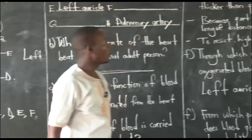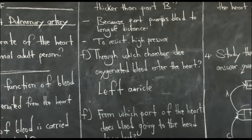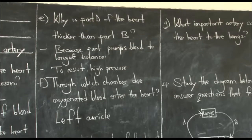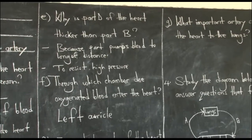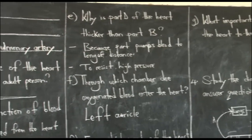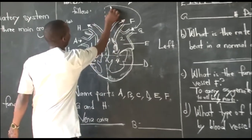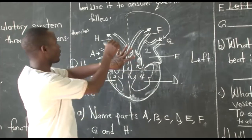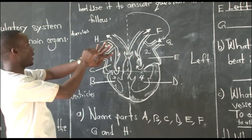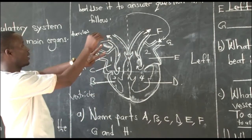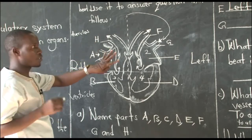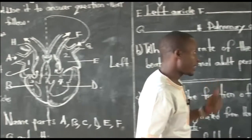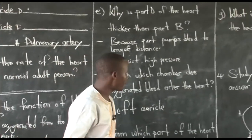The next question asks: what important artery connects the heart to the lungs? Blood has to leave the heart and go to the lungs. That is vessel number two on our hand — you can answer that from our earlier discussion.